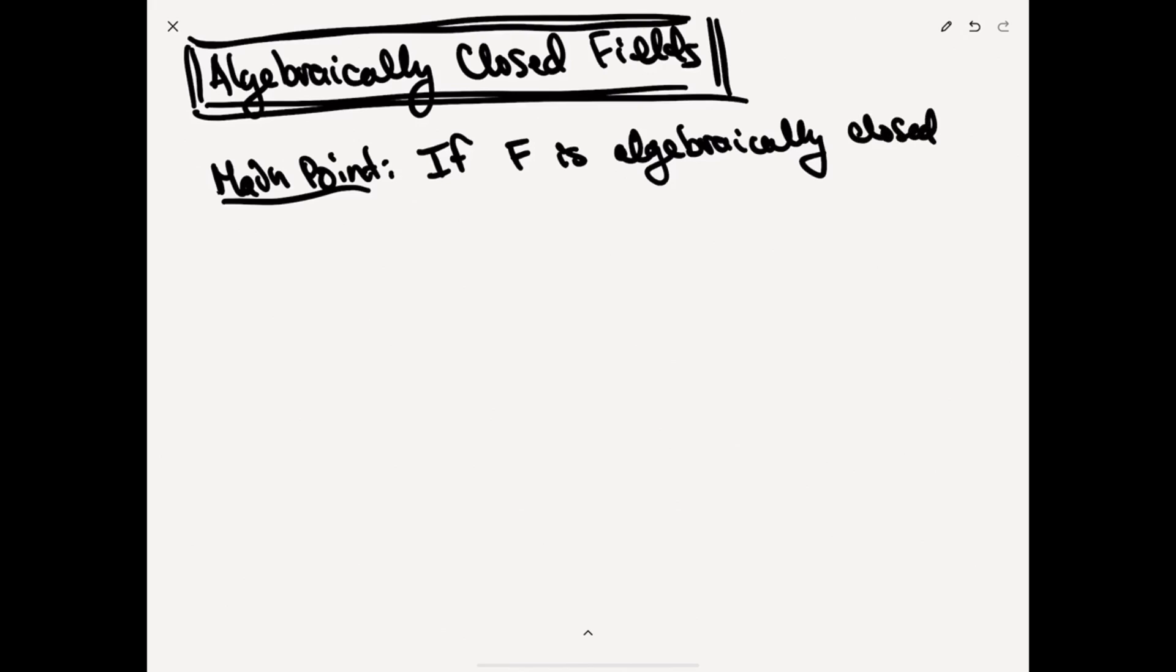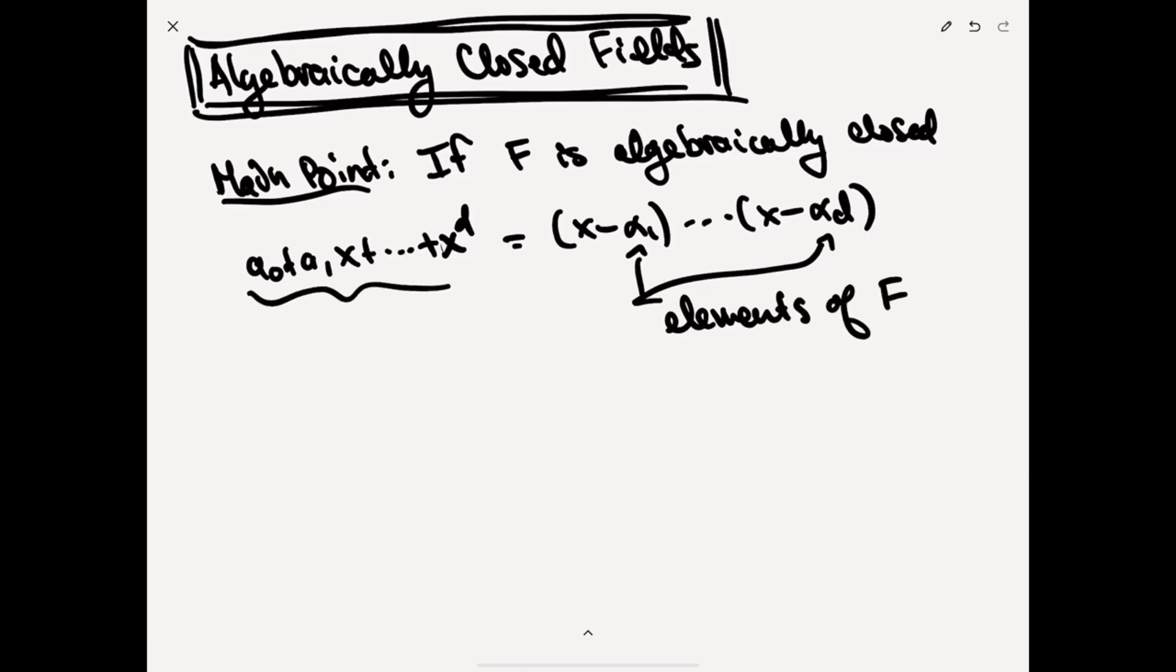then for any polynomial you have, let's write A0 plus A1X, let's do monic polynomials. So X to the D, where AD is equal to one, right? So this thing factors as X minus alpha one times X minus alpha D,